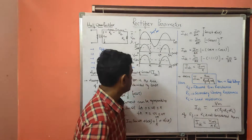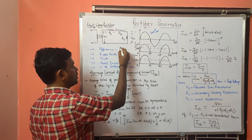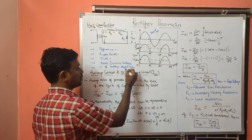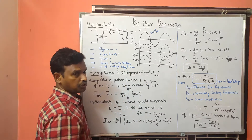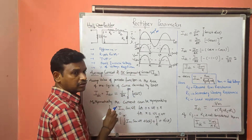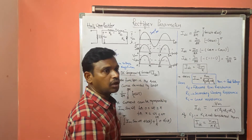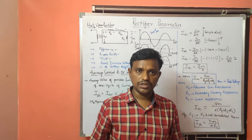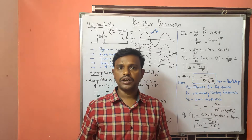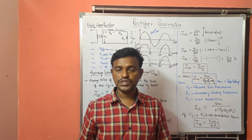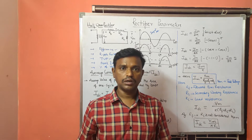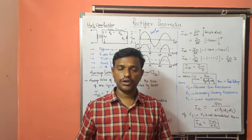So here we have efficiency, ripple factor, transformer utilization factor, peak inverse voltage, and percentage voltage regulation. To calculate these, we require some calculations — the average DC component of current IDC, the DC voltage VDC, and the RMS value of this half-wave rectifier.